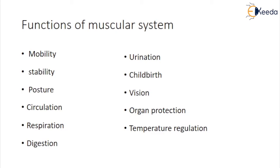Functions of the muscular system — Mobility: the muscular system's main function is to allow movement. When the muscles contract, they contribute to gross and fine movement. Gross movement refers to large coordinated motion, and the larger muscles of the body are usually responsible for this type of action. Most muscle movement of the body is under conscious control; however, some movements are reflexive, such as withdrawing a hand from a source of heat.